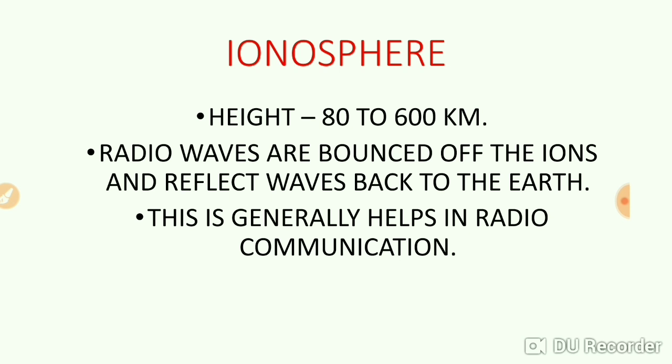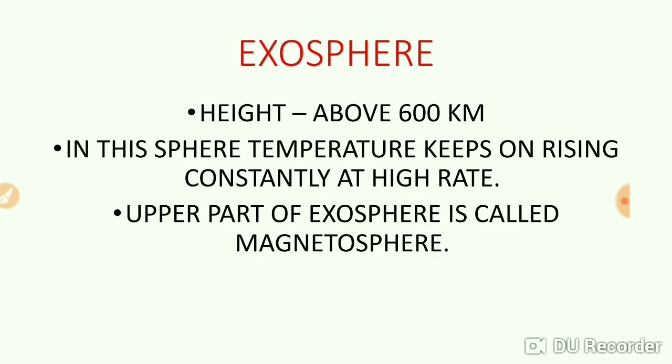In the mesosphere, the temperature drops down to about minus 100 degrees Celsius. Next is the ionosphere. The height of the ionosphere ranges between 80 to 600 kilometers. Radio waves are bounced back from the ionosphere to Earth, which generally helps in radio communication.